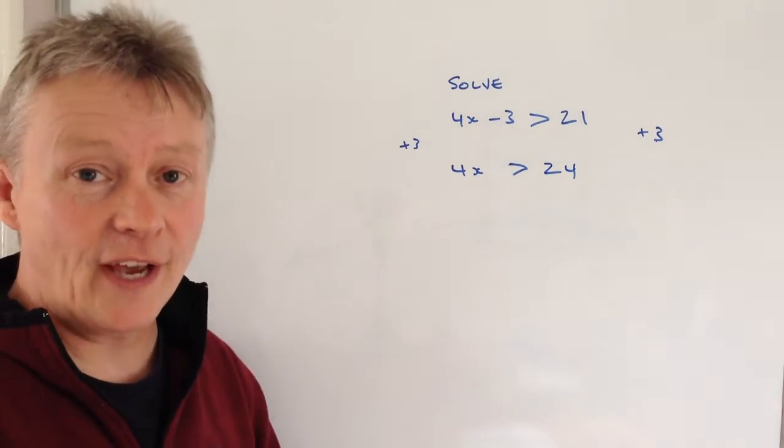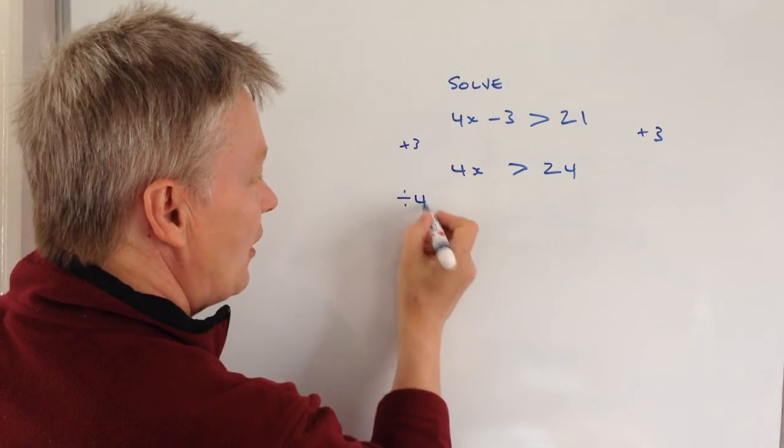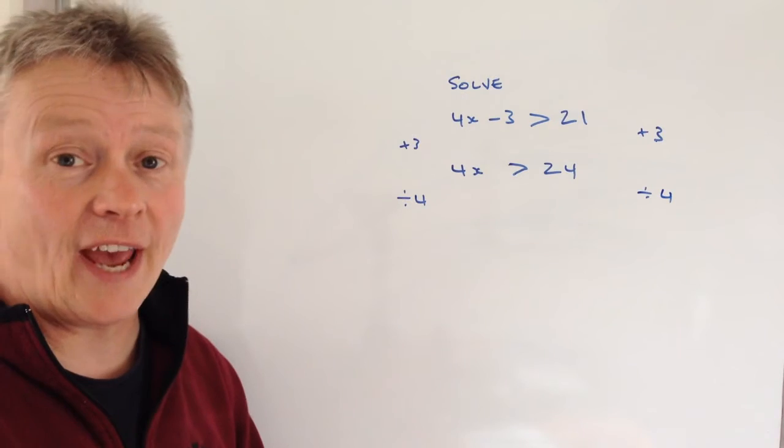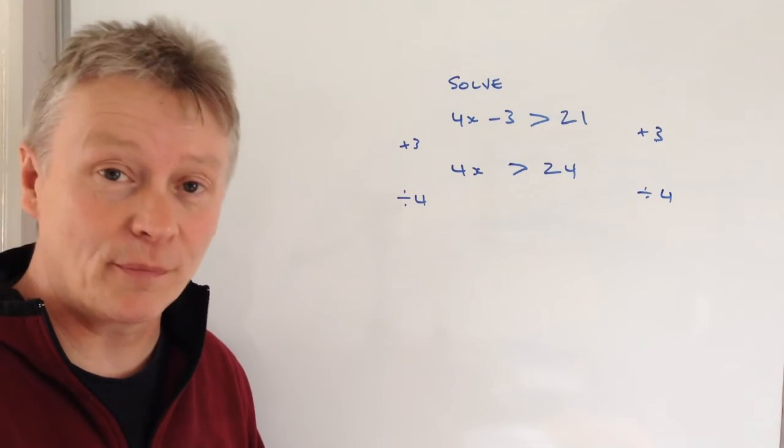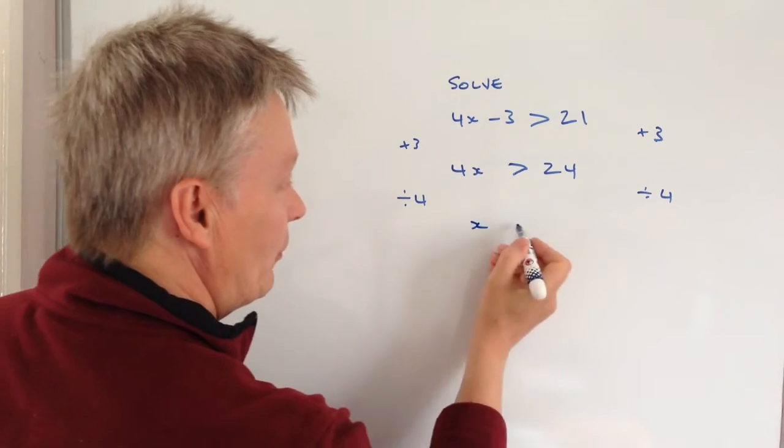Okay, so I've got 4 lots of x is greater than 24. So if I divide both sides by 4, it then tells me that I can get the value of x on its own because 4 divided by 4 is x, it's 1. So that would be that side.